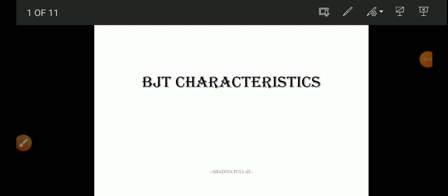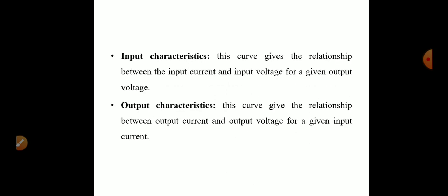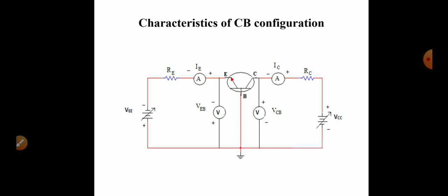In this video we are going to discuss BJT characteristics. Characteristics is the graphical representation among different currents and voltages of a transistor. BJT characteristics give the behavior of a transistor, and there are two sets of characteristics: input characteristics and output characteristics. Input characteristics is a curve giving the relationship between input current and input voltage for a given output voltage. Output characteristics gives the relationship between output current and output voltage for a given input current.